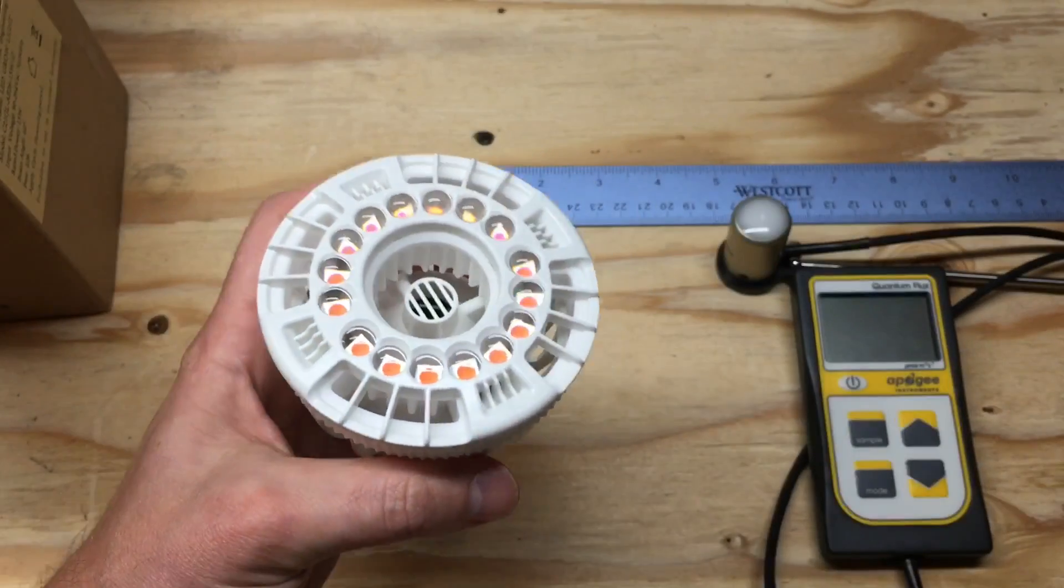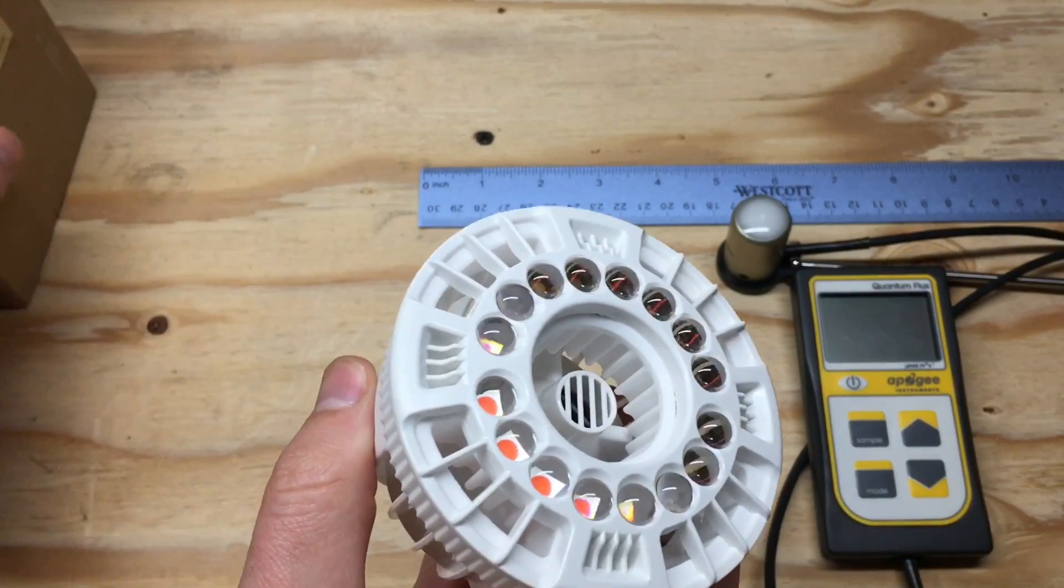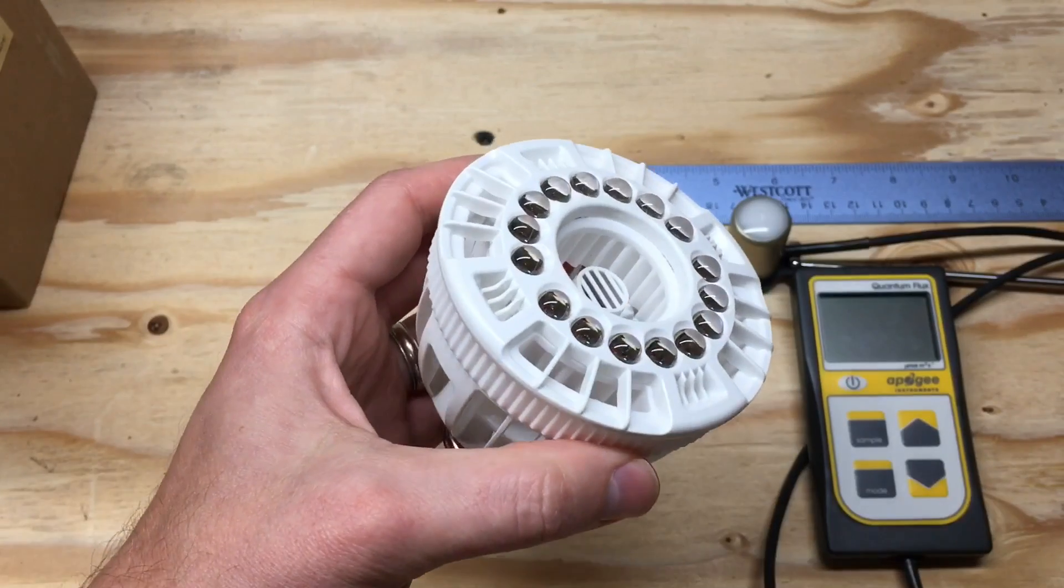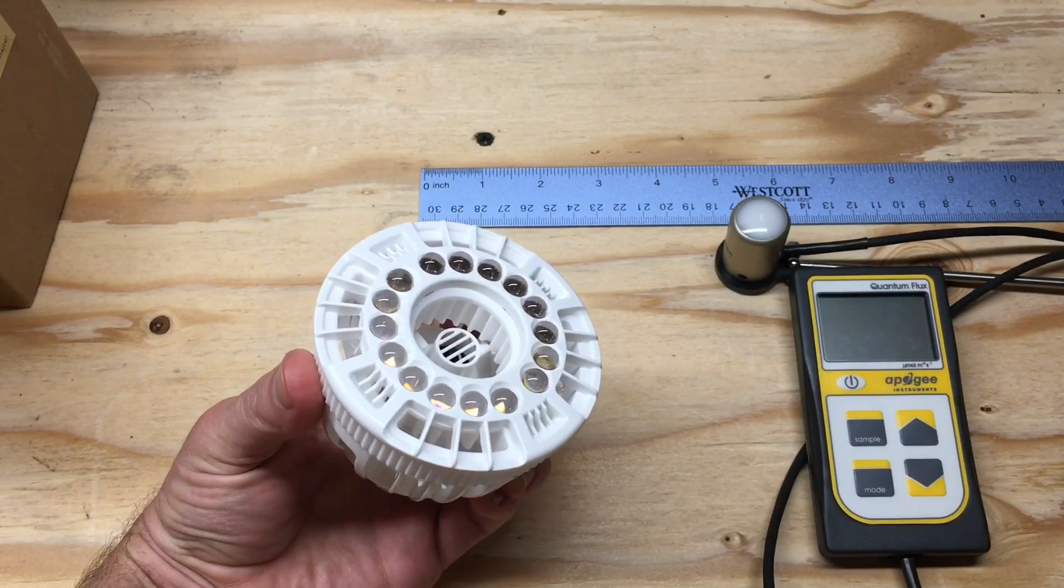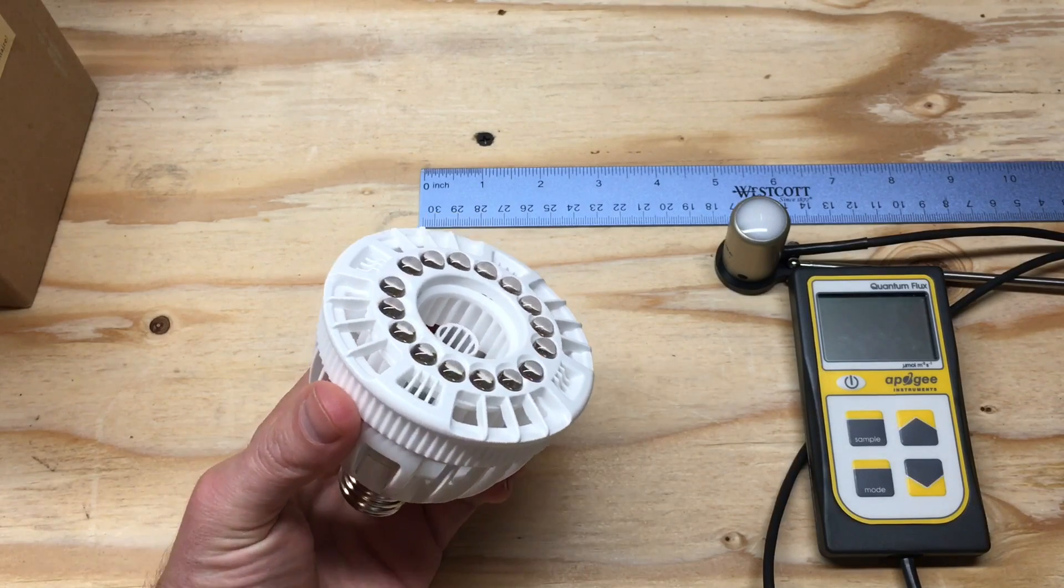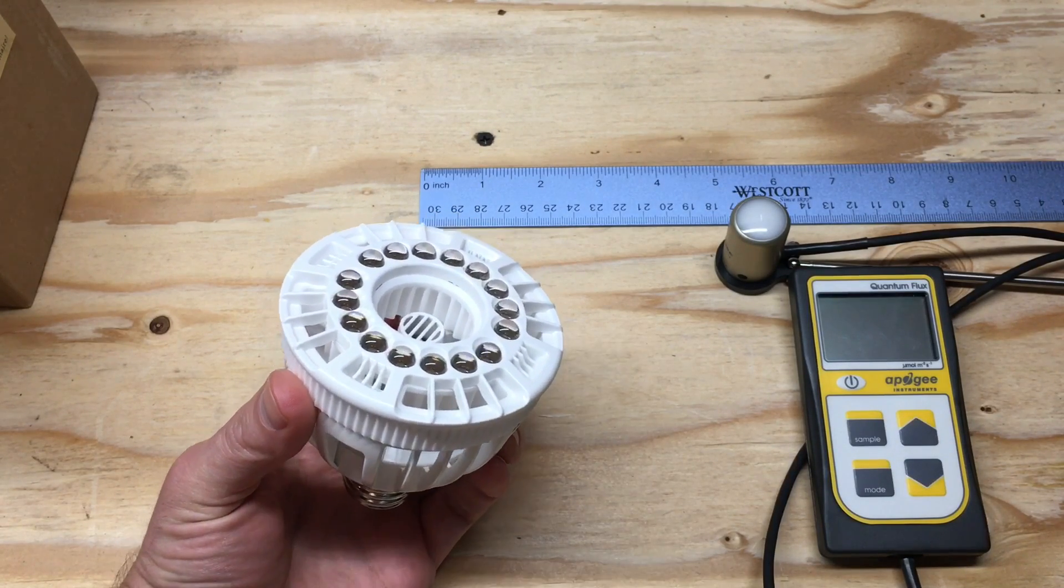This bulb is perfect for covering a small area or to provide supplemental lighting for your indoor grow. You might also consider using it for seedlings and clones or for a small indoor herb garden.